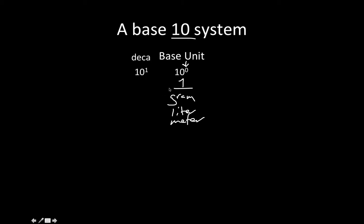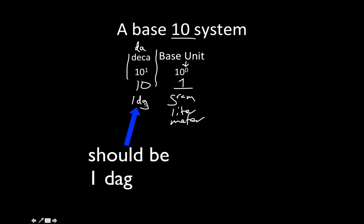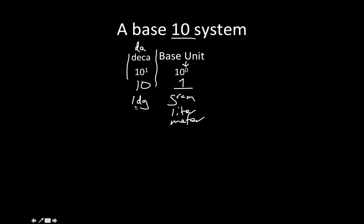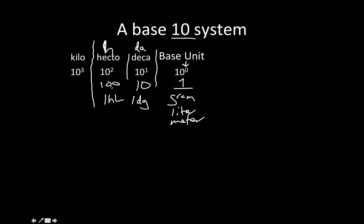When we go to 10 to the first power, that's deca, notation dA, which equals 10. So one decagram contains 10 grams. Next, 10 to the second power is hecto, shorthand H, which equals 100. So one hectoliter contains 100 liters. Then kilo is 10 to the third power, notation lowercase k, which equals 1,000. So in one kilogram there are 1,000 grams.